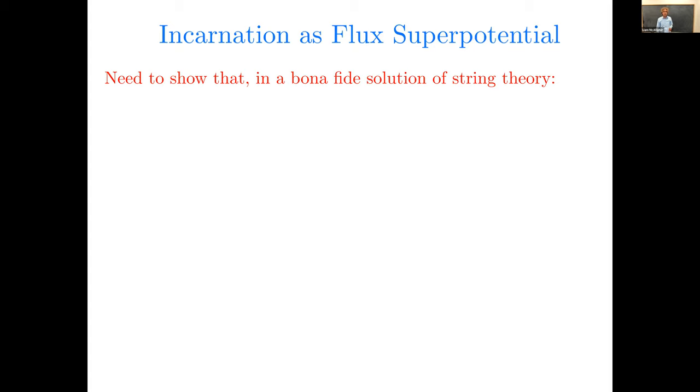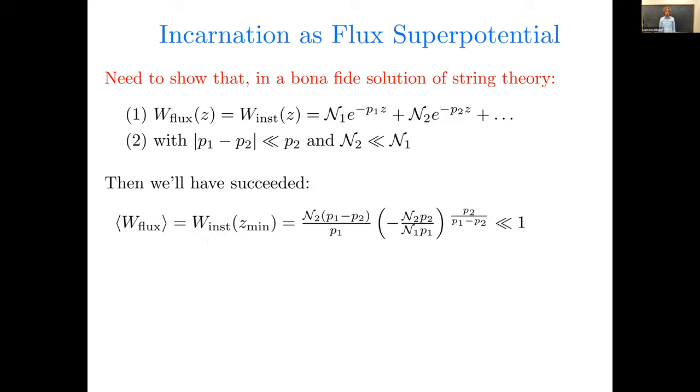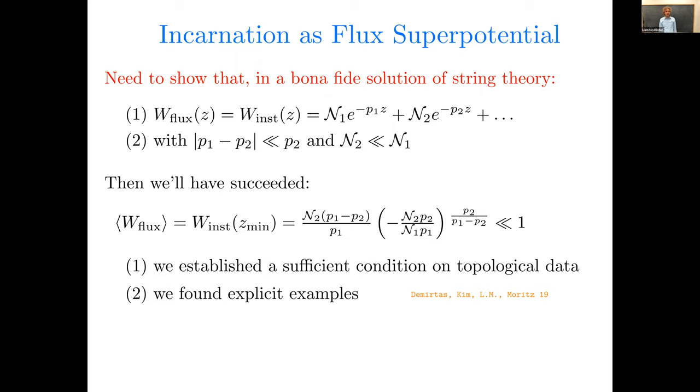Okay, so that's all. It's just a basic relationship about the minimum of a function of one variable depending on four integer parameters, actually rational parameters. So how do we actually get this in string theory? What we need to show is that in some bona fide solution of string theory, first of all, the flux superpotential itself really takes this kind of form, plus sub-leading corrections that we can afford to ignore. That we'll check. And it has to be a fine-tuned racetrack. Namely, there has to be a hierarchy in the prefactors and a near equality of the exponents. If we can do that, we'll have succeeded because then the expectation value of the flux superpotential will be extremely small, and so we'll be ready to construct a KKLT vacuum.